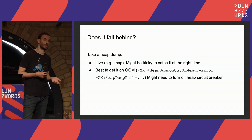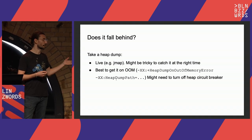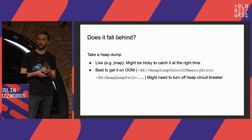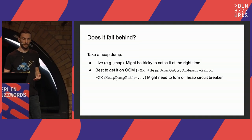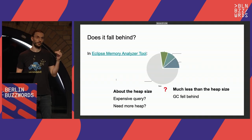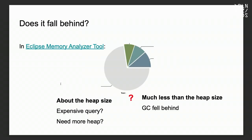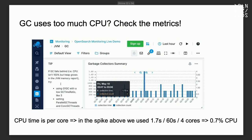To diagnose if GC is falling behind, the easiest way is a heap dump. You can configure the JVM to take one on out-of-memory, or take it manually when heap is high. Open it with Eclipse Memory Analyzer and check the referenced heap. If the referenced heap is close to the heap size, we need more heap — it's a heap problem, not a GC problem, possibly caused by a very expensive query. If referenced memory is much smaller, the rest is garbage that should have been collected — that's a GC problem.